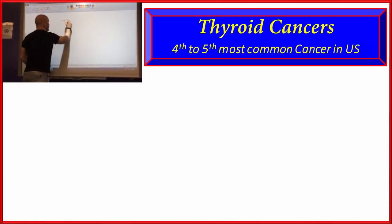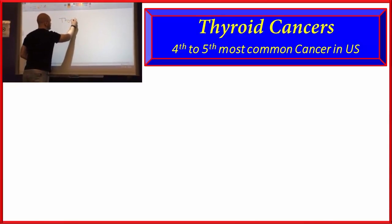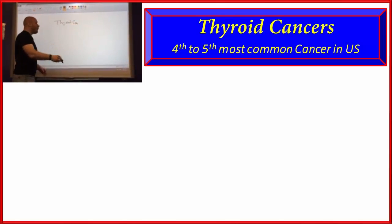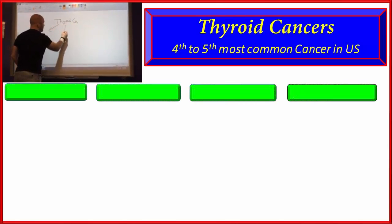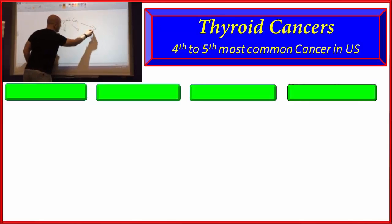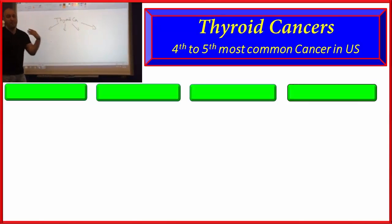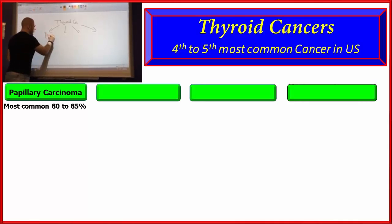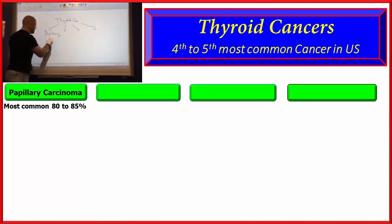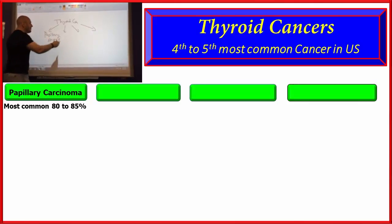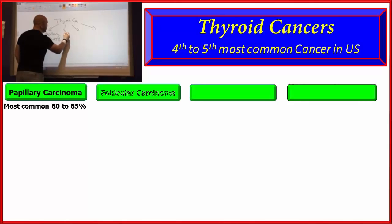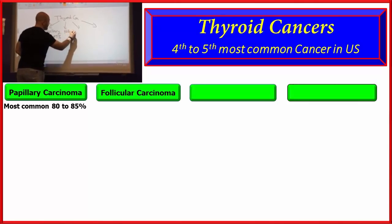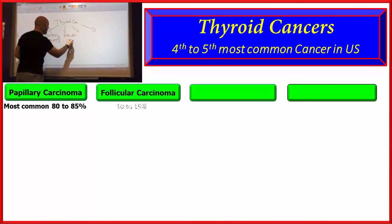So thyroid cancer — there are four main subtypes. The most common by far is something called papillary carcinoma, which accounts for about 80 to 85% of cases. The second most common is something called follicular carcinoma, which accounts for 10 to 15% of cases.